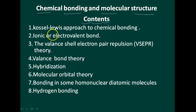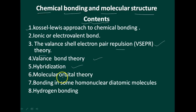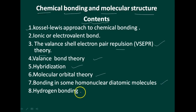These are the contents you are studying in this chapter: Kossel-Lewis approach to chemical bonding, ionic or electrovalent bond, the valence shell electron pair repulsion theory — this will be called VSEPR theory — valence bond theory, hybridization, molecular orbital theory, and bonding in some homonuclear diatomic molecules and hydrogen bonding. I will cover all these concepts in this chapter.